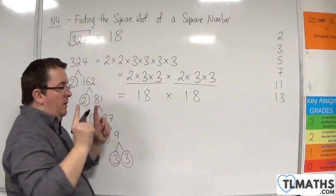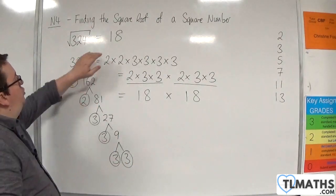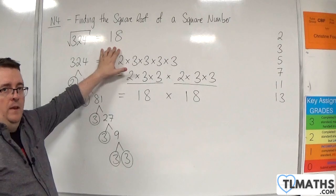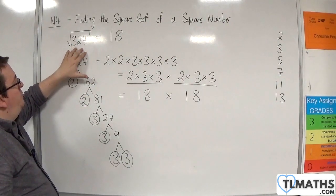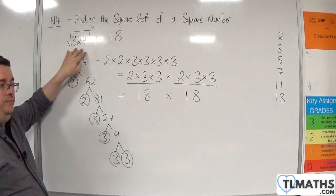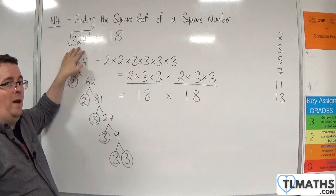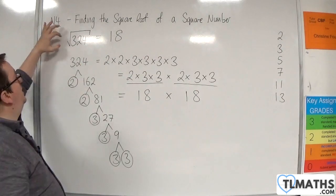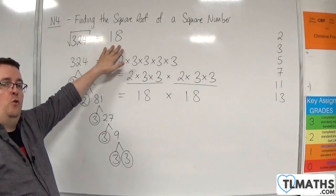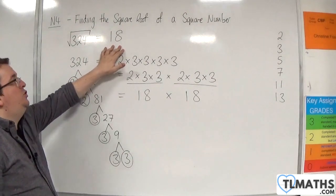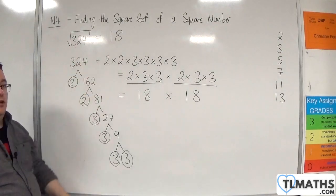Now before I start getting comments thrown at me, it is just 18. When I write the square root of 324, that is taken to be the positive square root. Otherwise I would have to have a plus or minus out the front. So this is not plus or minus 18 — it is just 18. That is what that notation means.